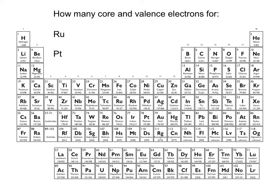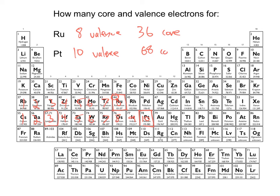Looking at transition metals: ruthenium is here, so it has one, two, three, four, five, six, seven, eight — ruthenium has eight valence electrons. 44 minus eight means it has 36 core electrons. For platinum: one, two — and lanthanum should be here, so there is a column there we would count — three, four, five, six, seven, eight, nine, ten. So platinum has 10 valence electrons, and 78 minus 10 means it has 68 core electrons.